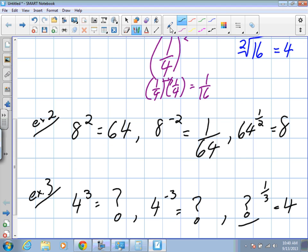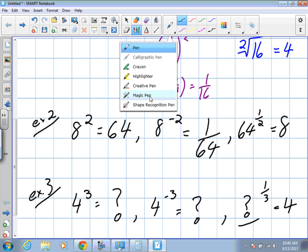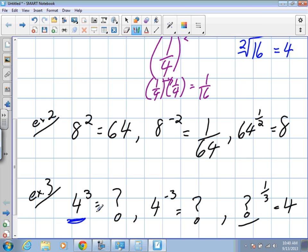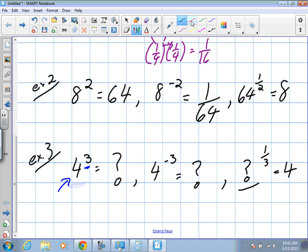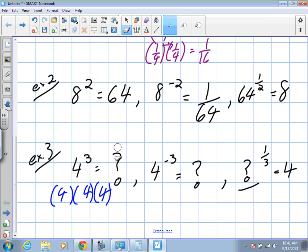So I put up another example here. This is base 4 to the power of 3. So when our power changes, what we know is that we're going to be multiplying the base by itself three times. So this is 4 by 4 by 4. Anyone know what that is? That's right, 64. Good.